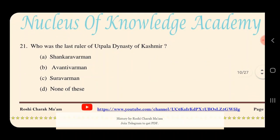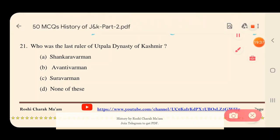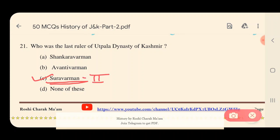Question 21: Who was the last ruler of the Utpala dynasty of Kashmir? Options: A) Shankaravarman, B) Avantivarman, C) Suravarman, D) None of these. The answer is C — Suravarman II. He was the last ruler of the Utpala dynasty of Kashmir.